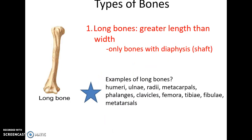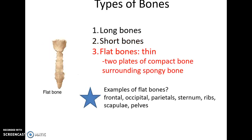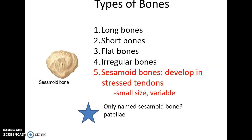Long bones are longer than they are wide and possess a diaphysis, or shaft. Short bones are somewhat cubic, having about the same width as height. Flat bones are very thin — basically two plates of compact bone tissue surrounding some spongy bone tissue. Irregular bones tend to have complex shapes and don't fit into the other categories.